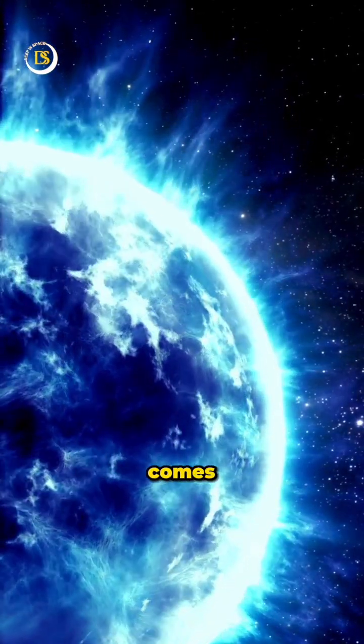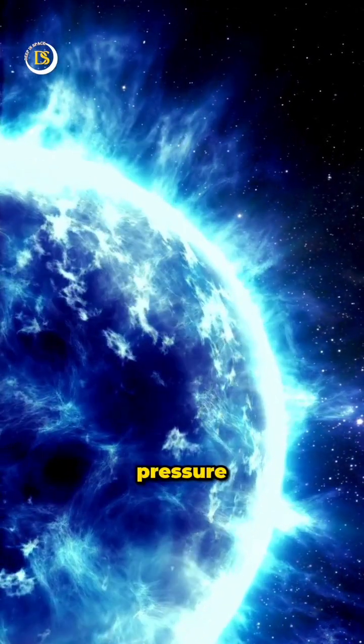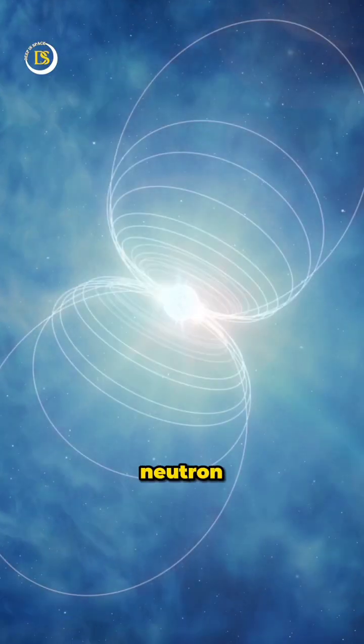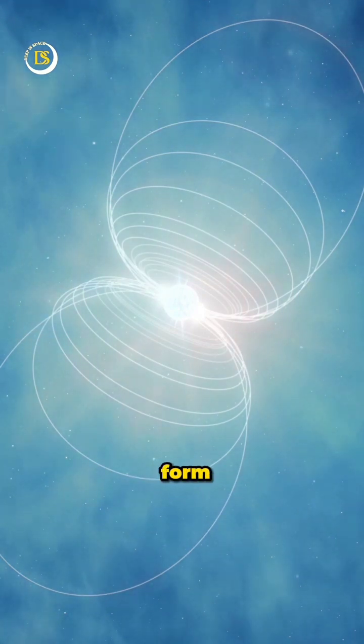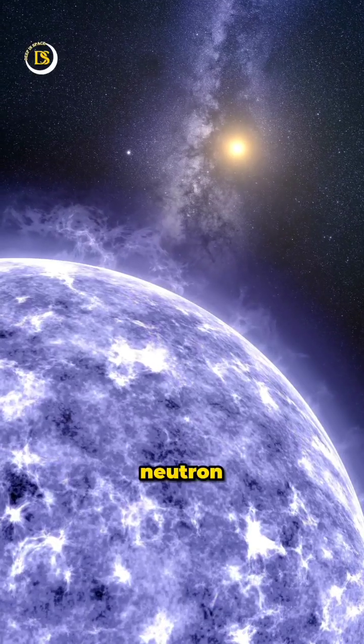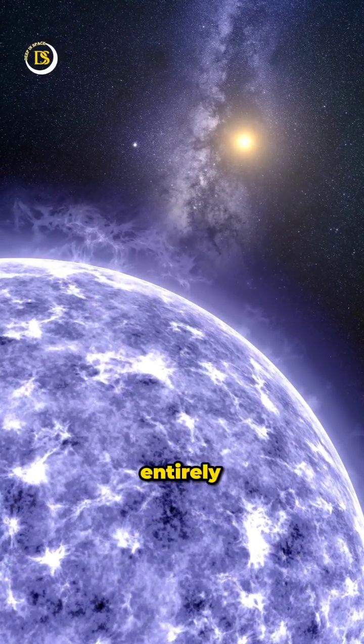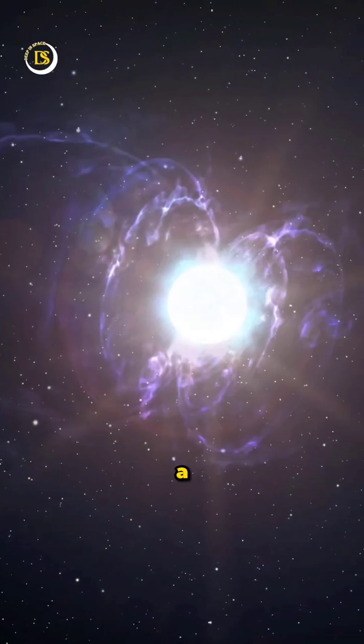The idea of strange stars comes from the theory that under extreme pressure and density, such as inside a neutron star, quarks could be squeezed so closely together that they form strange matter. If a neutron star were to convert entirely into strange matter, it would become a strange star.